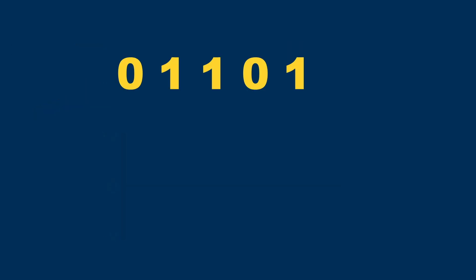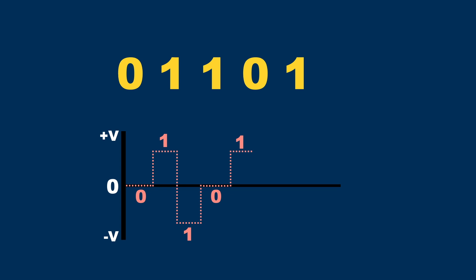So for example here, the first bit is a zero, so the signal stays at the zero line. The next bit is a one, so the signal goes to a positive voltage level. The next bit is also a one, so now the signal goes to a negative voltage level. The next bit is a zero, so the signal goes to the zero line. The next bit is a one, so the signal goes to the positive voltage level again, and so on. This is the basic principle of the Alternate Mark Inversion encoding.